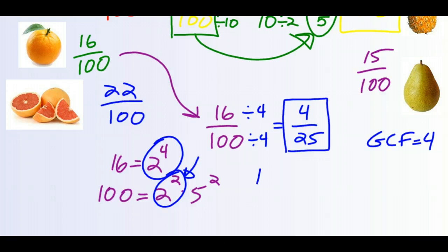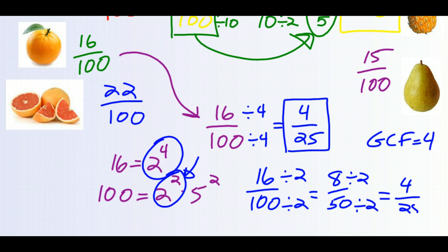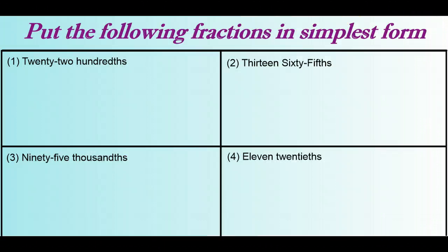Just as an exercise, if we divided both sides by 2 first — because we thought 2 might be the GCF — we would end up with 8 out of 50. Both of those are also divisible by 2, so we divide by 2 again and end up at 4 out of 25. So go ahead, pause the video, and put all of these four fractions in the simplest form. First, translate them from words into fractions, find the GCF, and put them into simplest form. Pause the video and come back when you're ready to go over it.